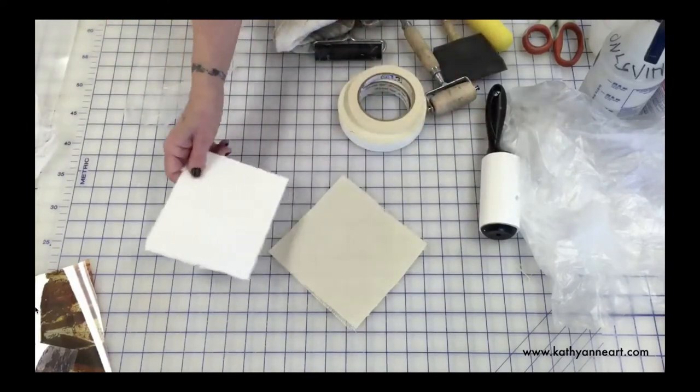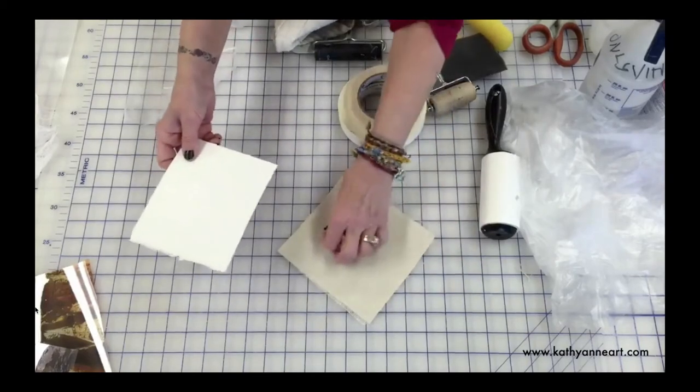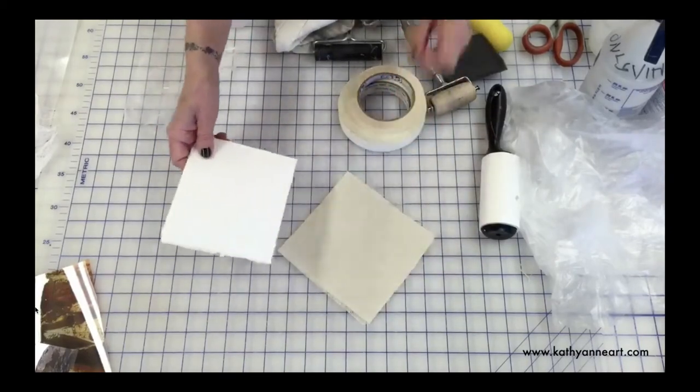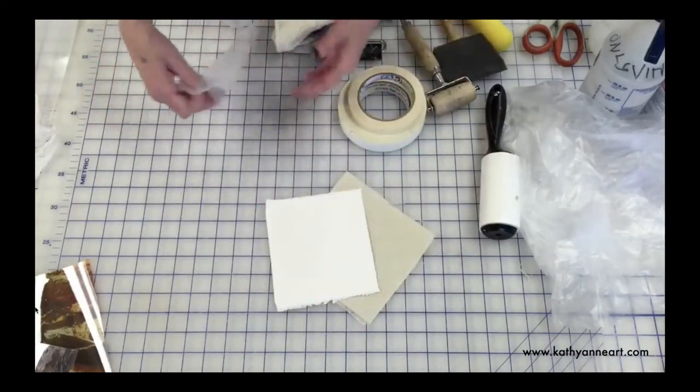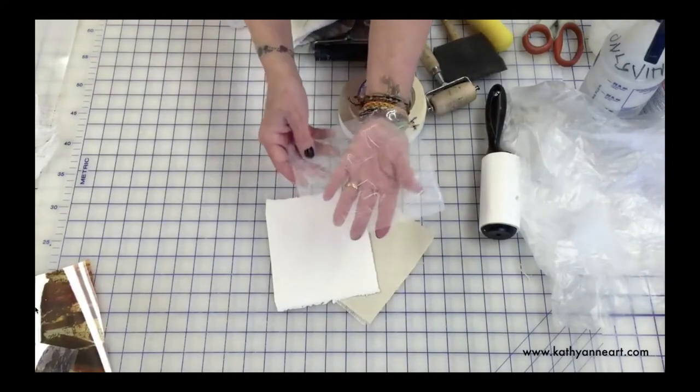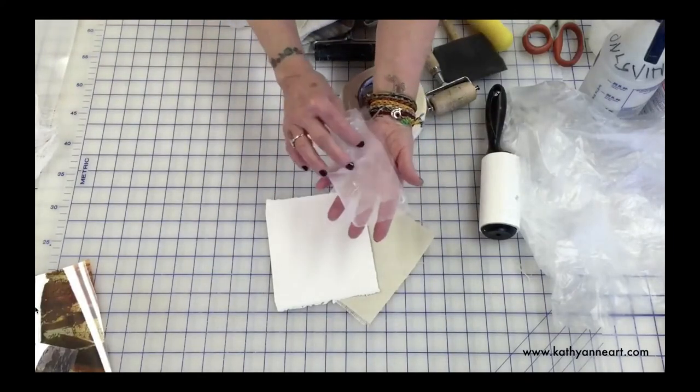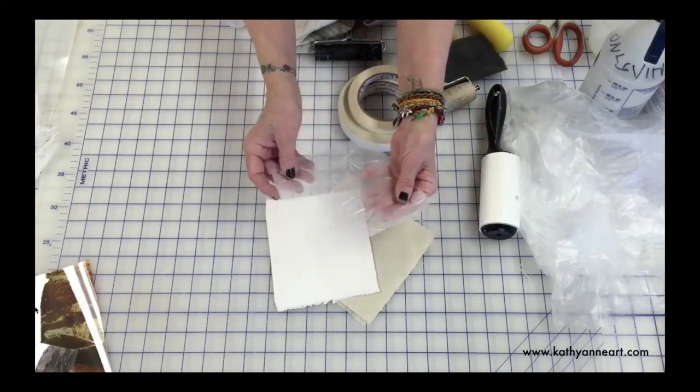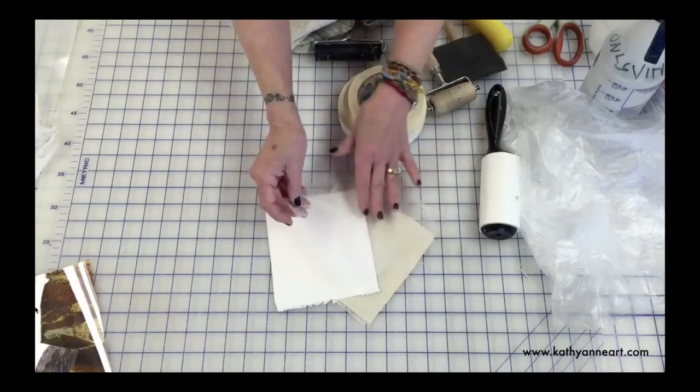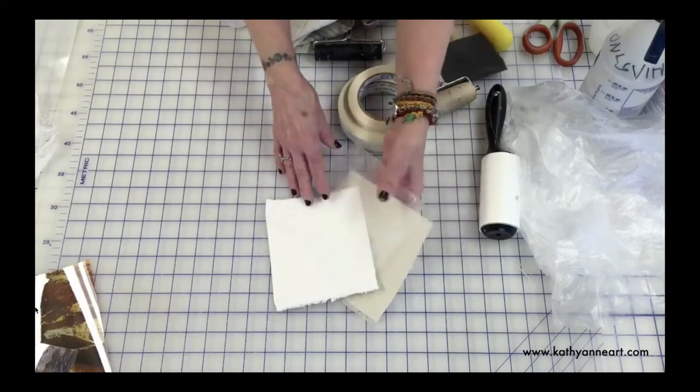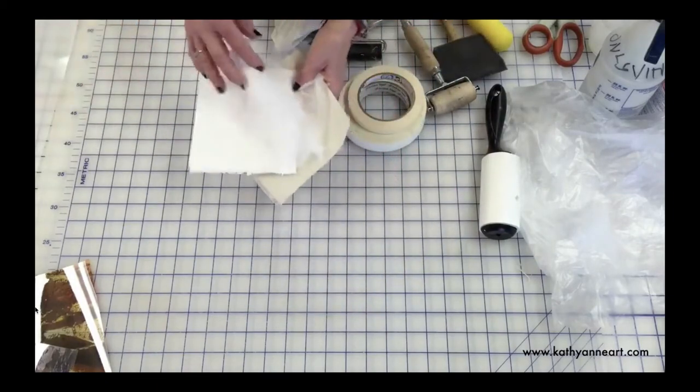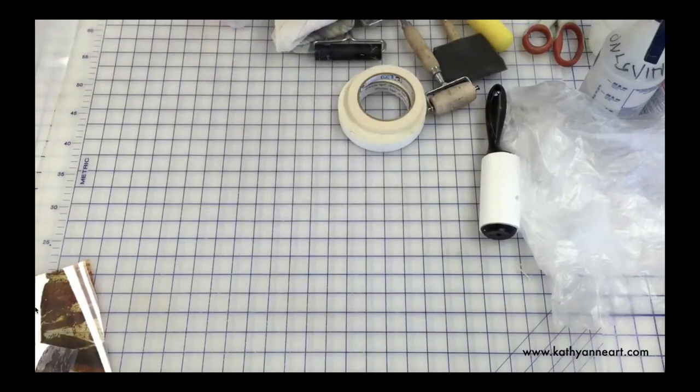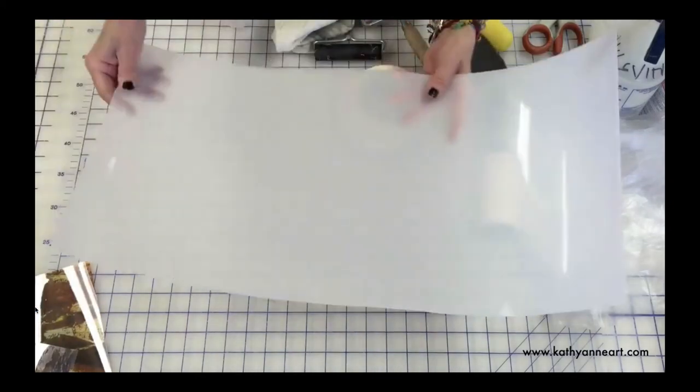This is a canvas and this is a very lightweight rice paper. Now you can buy something like that or you can use regular tissue paper just to do the practices and see what you like.